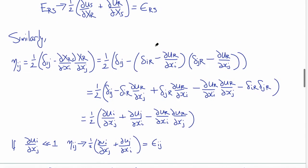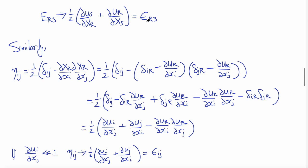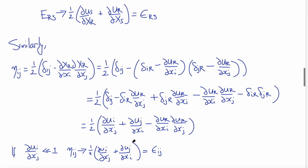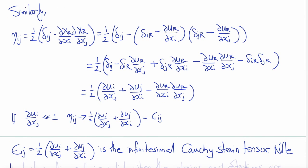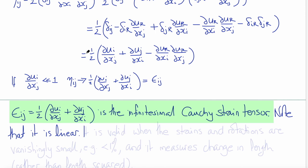If you look at these two expressions we derived, the equations are the same, though the indices and coordinates to which they are referred are different. In the limit when displacement gradients are small, the difference between the deformed and undeformed coordinates becomes negligible. Therefore, in the same linear limit, these are in fact the same equation, and we normally write it in terms of current coordinates: εij = ½(∂ui/∂xj + ∂uj/∂xi), which is clearly symmetric. This is the Cauchy strain tensor — it is linear.